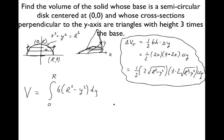So 2 over 2 is 1, 3 times 2 is 6, square root times square root is just what's inside. How do we treat R²? Just think of it like a number — hold onto R. The anti-derivative of R² with respect to y is R²y, and then minus y cubed over 3. Easy — evaluated from 0 to R.